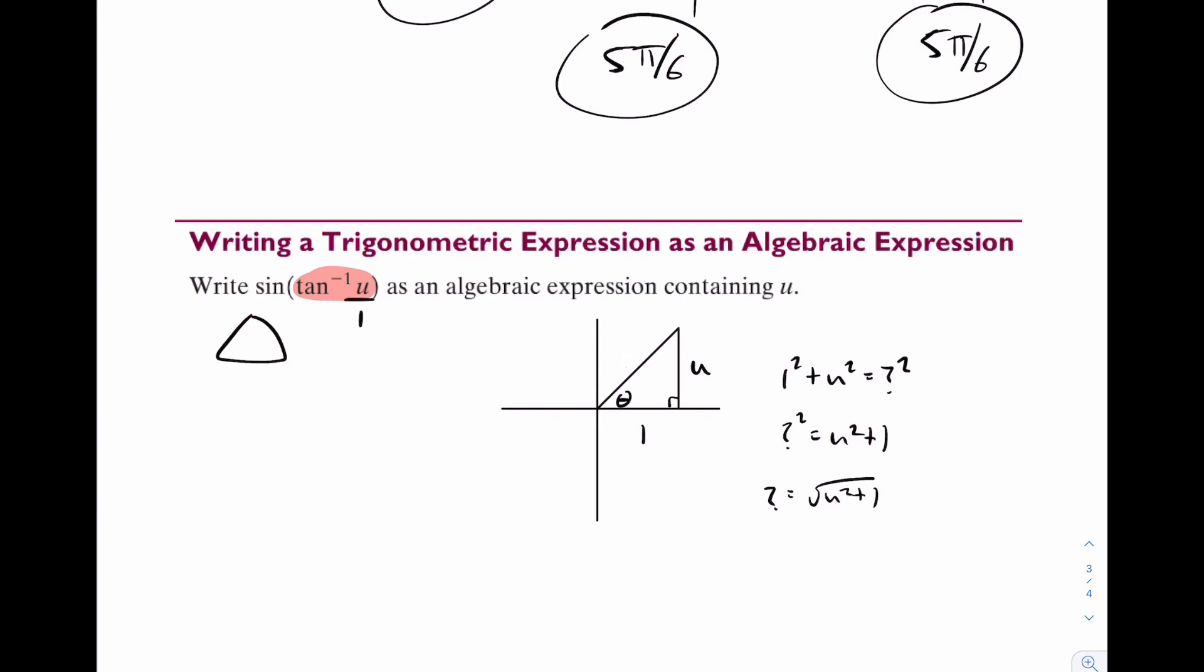So I'm going to erase this. I can write the root of u squared plus one. And now I can figure it out. The sine of theta is going to be u over the root of u squared plus one. Now you could rationalize that, but the book leaves it. So I'm okay with you leaving like this as well.